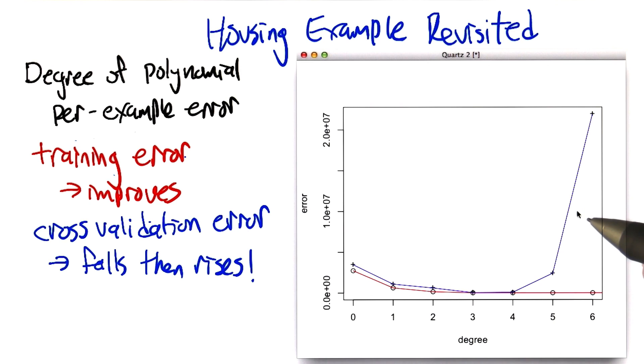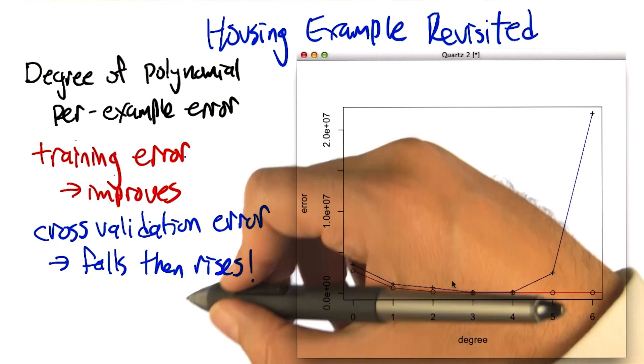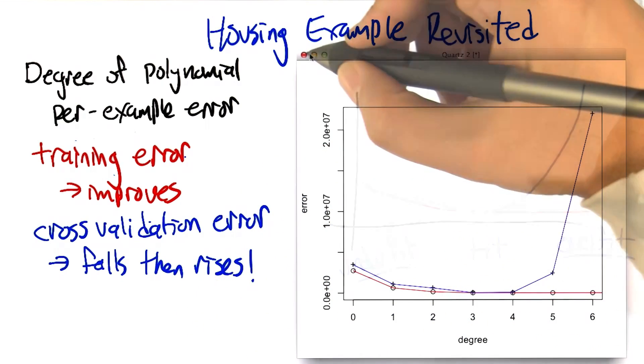It does make sense. So the problem is that as we give it more and more power, we're able to fit the data. But as it gets more and more power, it tends to overfit the training data at the expense of future generalization.